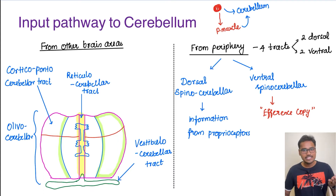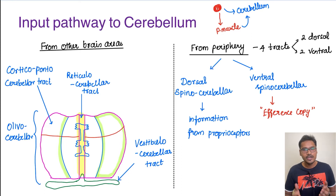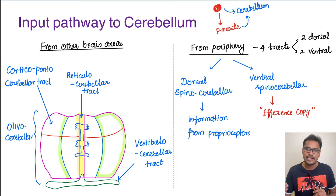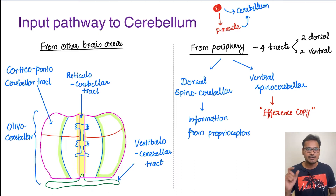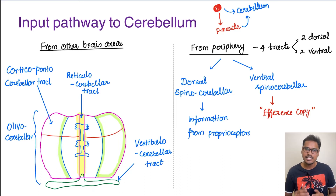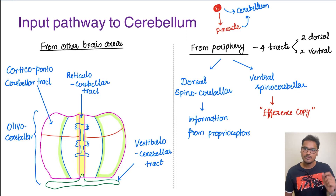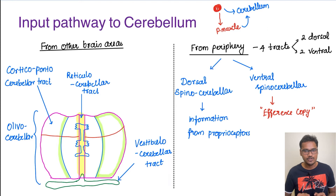The cerebellum has the blueprint from the cortex and also the image of the ongoing action. Whenever there is a mismatch, it corrects on its own — there is no need to send impulses back to the motor cortex. The cerebellum acts like a manager and controls ongoing movements, adjusting them according to the needs of the person. So it must have inputs from both the cortex and the periphery.